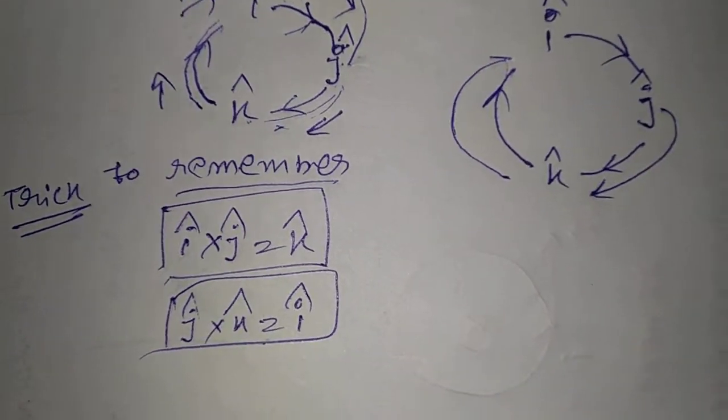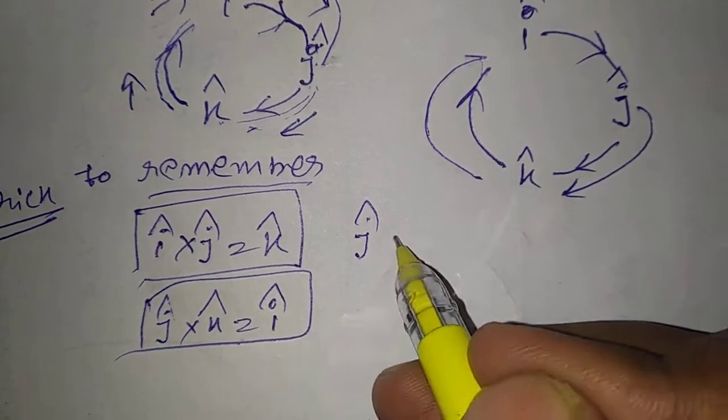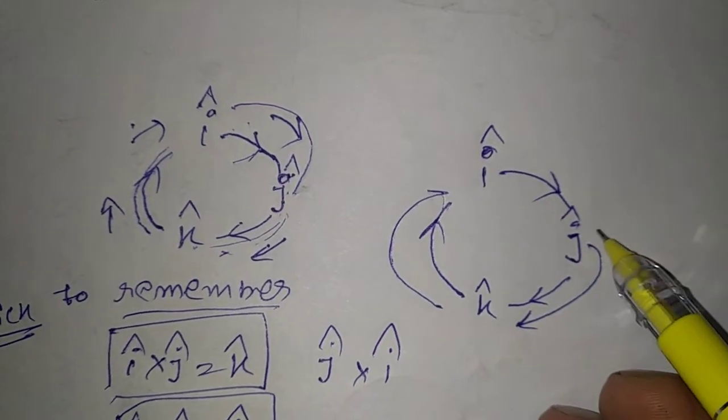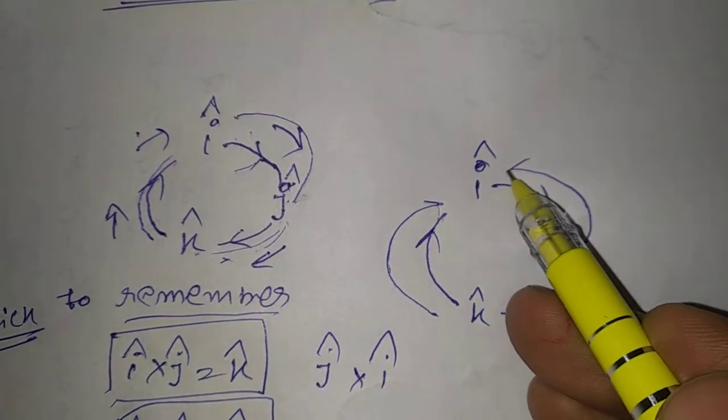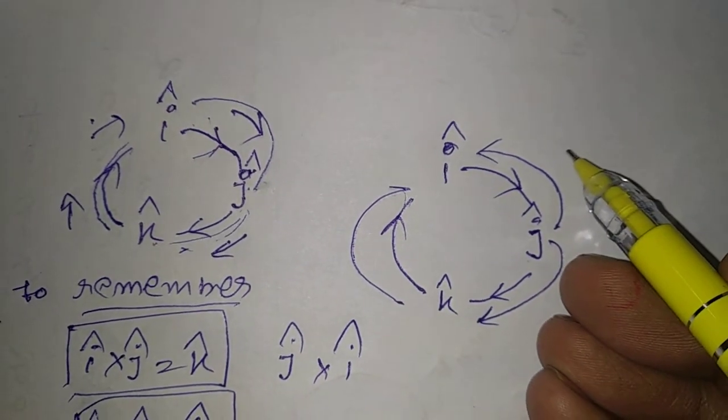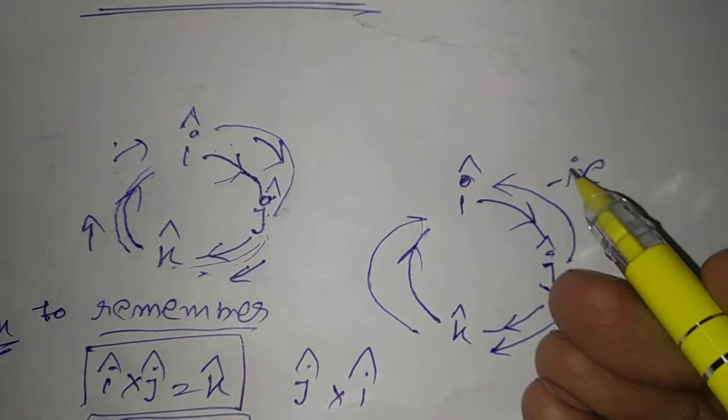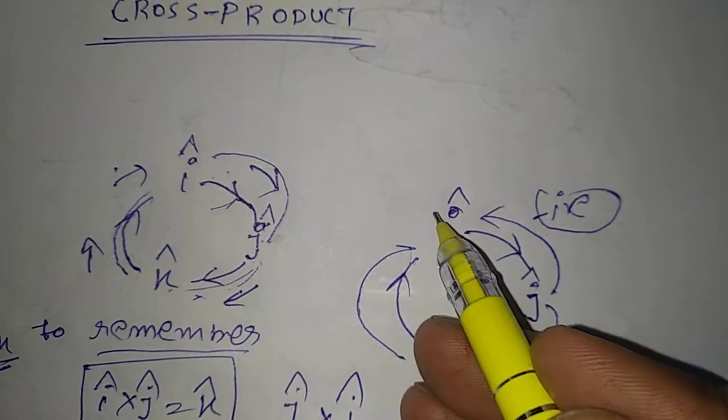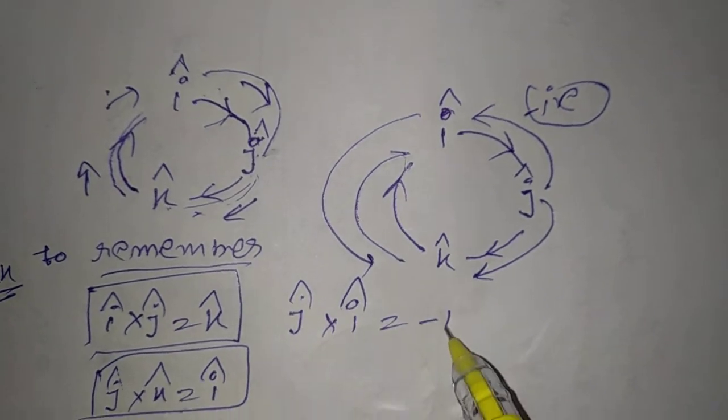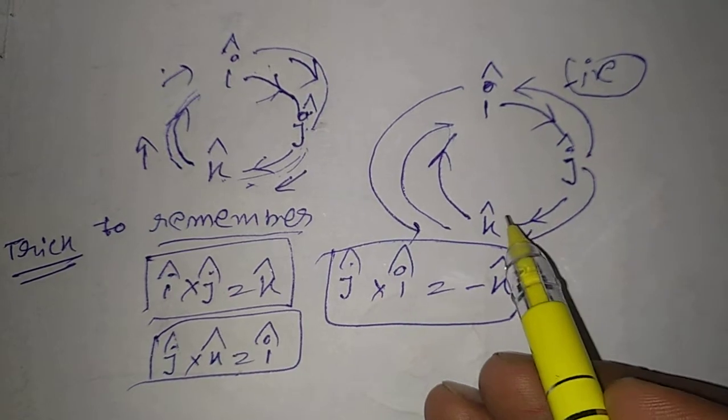Then another trick is: if I do J cross I, then what will it be? J goes here to I - that is opposite direction. So the trick is, when a unit vector goes to the opposite direction, then it will be negative. And I goes to where? K. So it will be minus K.